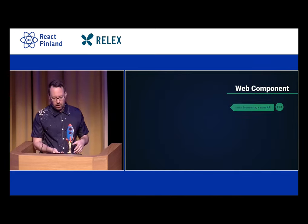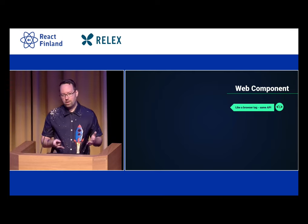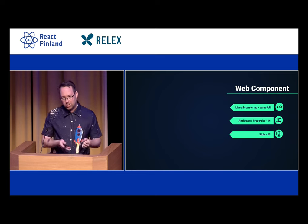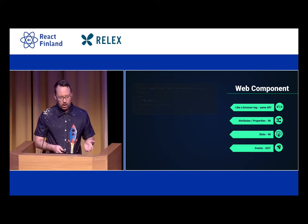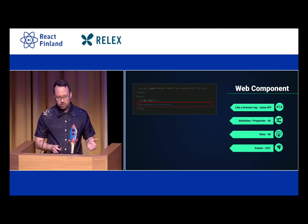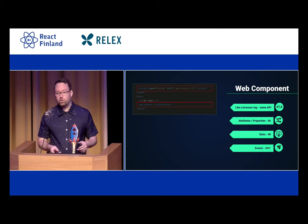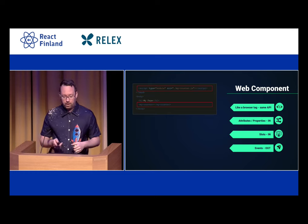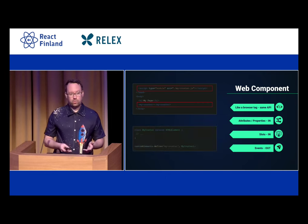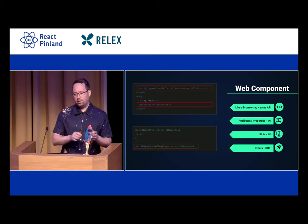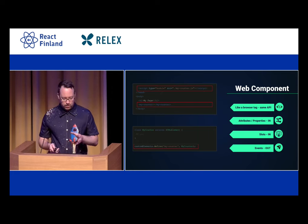Now let's compare with web components. Web components are exactly the same as a browser tag — the same API. That means we have attributes and properties going in, slots that can also go in, and events that go out. As a user, all you need to do to use such a component is put the tag in HTML and it's there. To make sure the browser knows what to render, you load the code with a single script tag. Just two lines and you get the same functionality. How do you define it? You start by extending HTMLElement, then connect the tag name with your class using custom elements define.